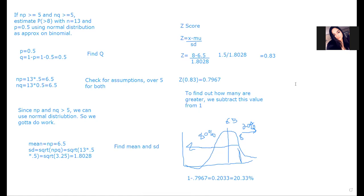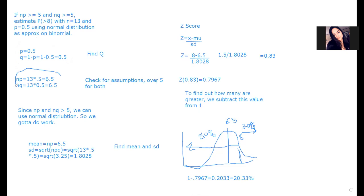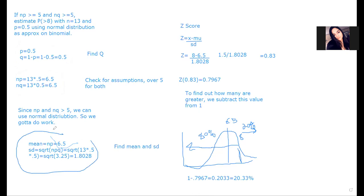So 20.33% - about 20% - of people meet this qualification. The main thing you have to look out for on this question is how you find P and Q, how you find NP and NQ, and these specific formulas for mean and standard deviation of the binomial.